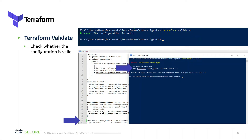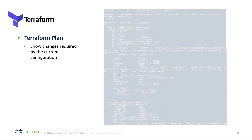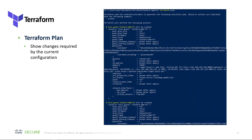Terraform plan shows the changes required by the current configuration — what's going to happen when you deploy. It evaluates whether adjustments can be made or whether it needs to destroy and rebuild. For a new instance, you can see the virtual machines that are going to be created with the specifics you've defined.